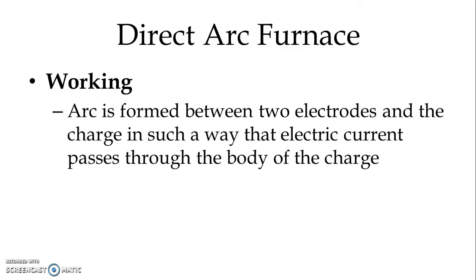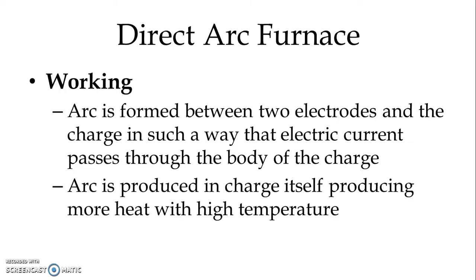Now let us study the working of Direct Arc Furnace. We know that arc must be generated to heat the charge. In case of Direct Arc Furnace, the arc is formed between two electrodes and the charge in such a way that electric current passes through the body of the charge. What we do is short-circuit the electrodes with the charge momentarily. Because of the short circuit, a spark is generated — that is the arc — and the current passes through the charge itself. That is why the name Direct Arc Furnace is given.